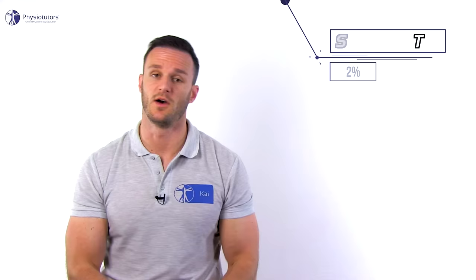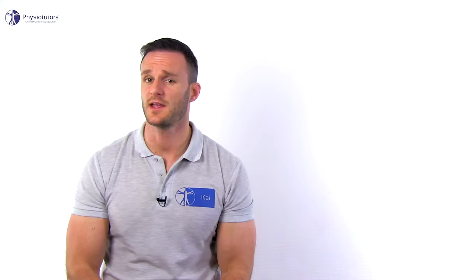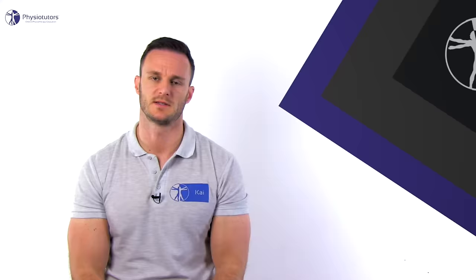Fishman et al. in the year 2002 compared the FAIR test with its ability to delay the Hoffman reflex, also called H reflex, which is a sensitive but not specific measure for nerve conduction. They found a sensitivity of 88% and a specificity of 83% for the FAIR test when using a delay of three standard deviations above the normal H reflex. As the H reflex is not an accurate gold standard and no other studies have been conducted on this test yet, we give it a questionable clinical value in practice.